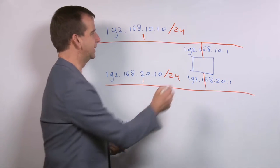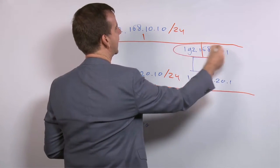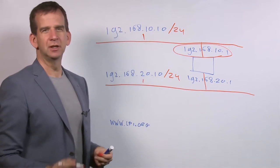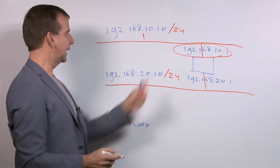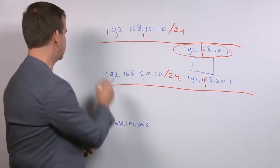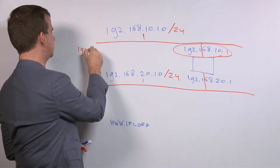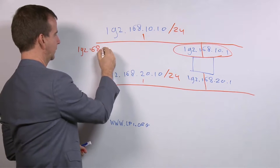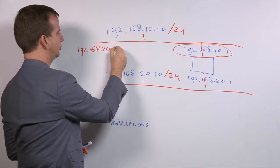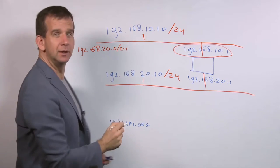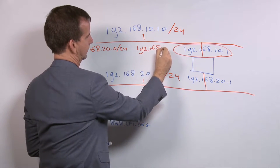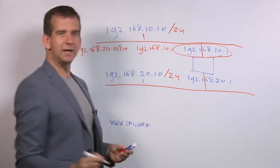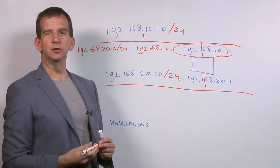So in the router definition, we need to specify the IP address that it needs for outgoing communication. Basically, we would need to define that to reach the network 192.168.20.0/24, the IP address to use is 192.168.10.1.